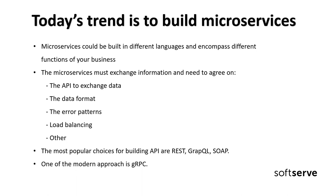Microservices must exchange information and agree on the API, how to exchange data, the data format, error patterns, load balancing, and so on. One of the most important is the API. Popular choices for API include REST, GraphQL, and today I want to show you another way called gRPC.